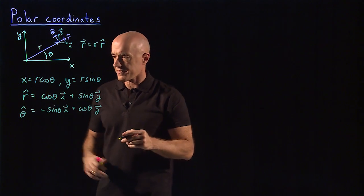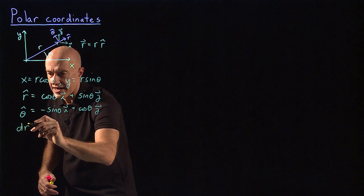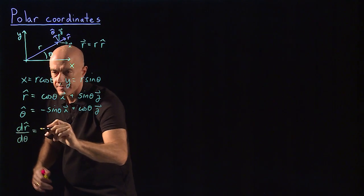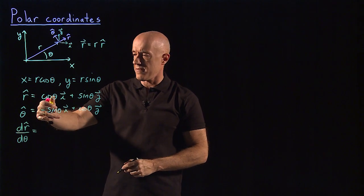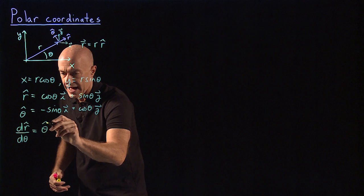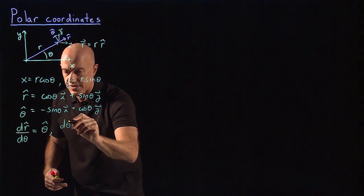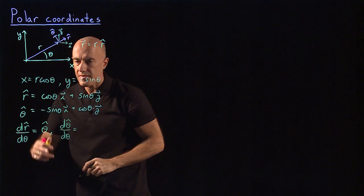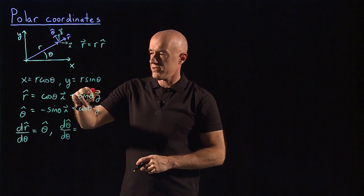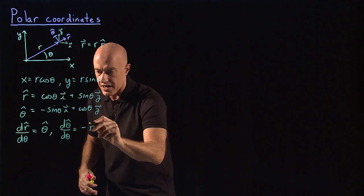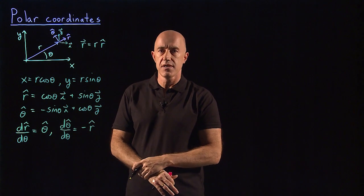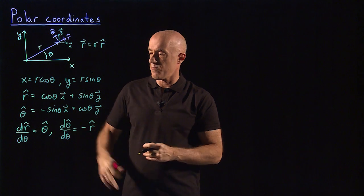We can look at the derivatives. We have normal derivatives here because r hat and theta hat are just functions of a single variable. So dr hat d theta: the derivative of cosine theta is minus sine theta, the derivative of sine theta is cosine theta, so dr hat d theta is just theta hat. And then the other derivative, d theta hat d theta: minus sine theta becomes minus cosine theta when you differentiate, cosine theta becomes minus sine theta. So this is just equal to minus r hat.